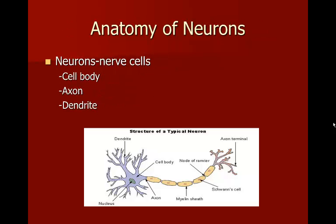Some anatomy: neurons are your nerve cells. They consist of the cell body, the axon — which is the tail of the cell — and dendrites, which are the branch-like structures. The axon terminal is where the tail leads off into different areas. Cells can be classified as myelinated or unmyelinated, referring to a fiber sheath that runs along the axon.